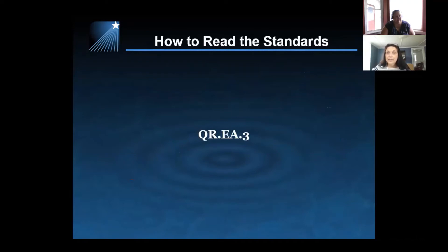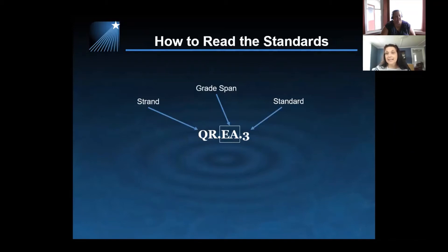How we read our standards has changed. We have our coding QREA3. The QR stands for our strand, which is quantitative reasoning. EA represents our grade span, which is early adolescence — grades six through eight. And three is the standard number. So QREA3 represents the third standard in early adolescence in quantitative reasoning.